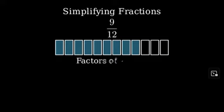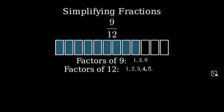Let's list out the factors of 9: 1, 3, and 9. And the factors of 12 are 1, 2, 3, 4, 6, and 12. Looking at both lists,